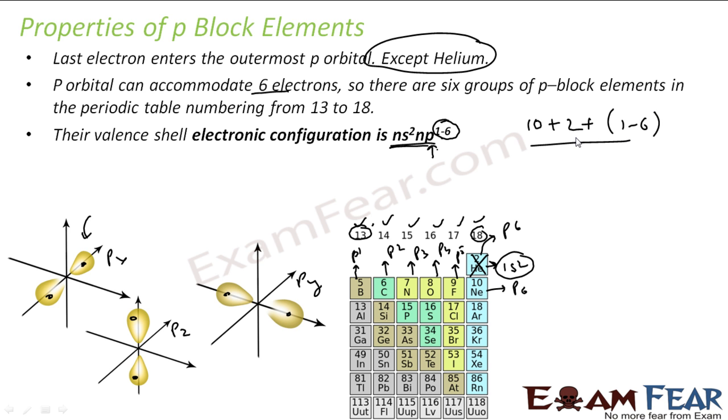So this is the formula: 10 plus 2 equals 12. You add 12 to this. For example, if there's only one electron in the P block, 12 plus 1 equals group 13. Only 2 electrons in the P orbital, 12 plus 2 equals 14. 3 electrons in P orbital, 12 plus 3 equals 15 group. 4 electrons in the P orbital, 12 plus 4 equals 16. 5 electrons in the P orbital, 12 plus 5 equals 17. 6 electrons in the P orbital, 12 plus 6 equals 18. Correct, this is the difference of 12.